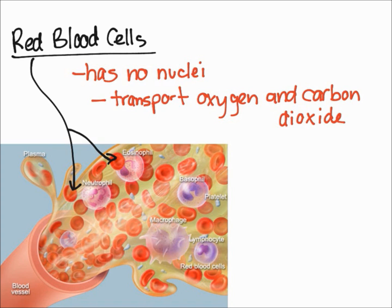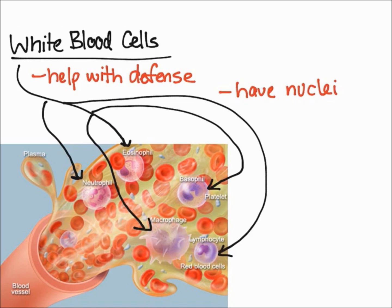Next, let's talk about white blood cells. White blood cells help with defense, and they have nuclei. They also have distinct types that you can differentiate by the way they stain. A few examples — basophils, neutrophils, and lymphocytes — are all subcategories of white blood cells. We're just going to say that white blood cells in general help with defense.